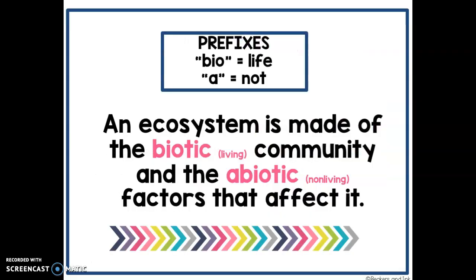There are two prefixes we're going to talk about that will make our understanding of biotic and abiotic factors very easy. Bio means life — if you think of biology, it's the study of living things. A means not, so if something is atypical it's not typical — it's the opposite. So our ecosystem is made of the biotic community, the community of living things, and the abiotic factors, which are the non-living things that affect it.